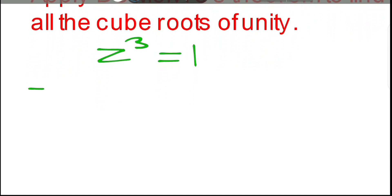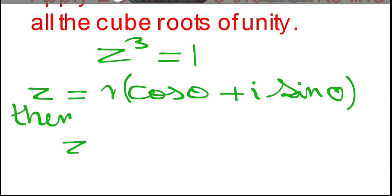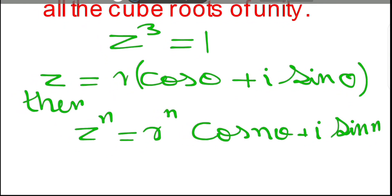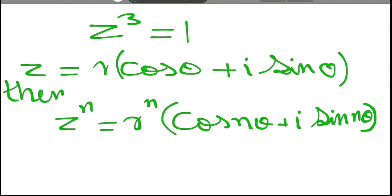De Moivre's theorem states: if z equals r(cos θ + i sin θ), then z to the power n equals r to the power n times (cos nθ + i sin nθ). So z to the power n equals r^n (cos nθ + i sin nθ). That's De Moivre's theorem.